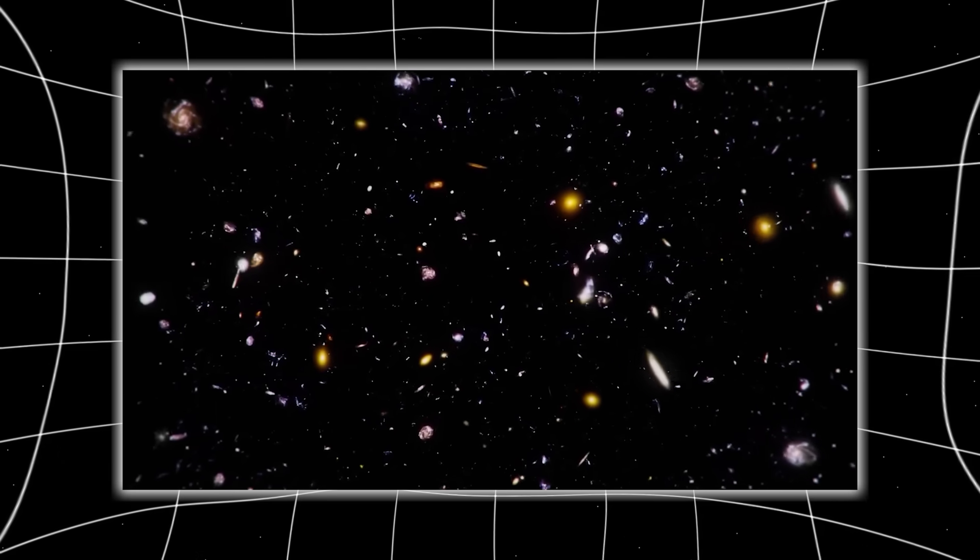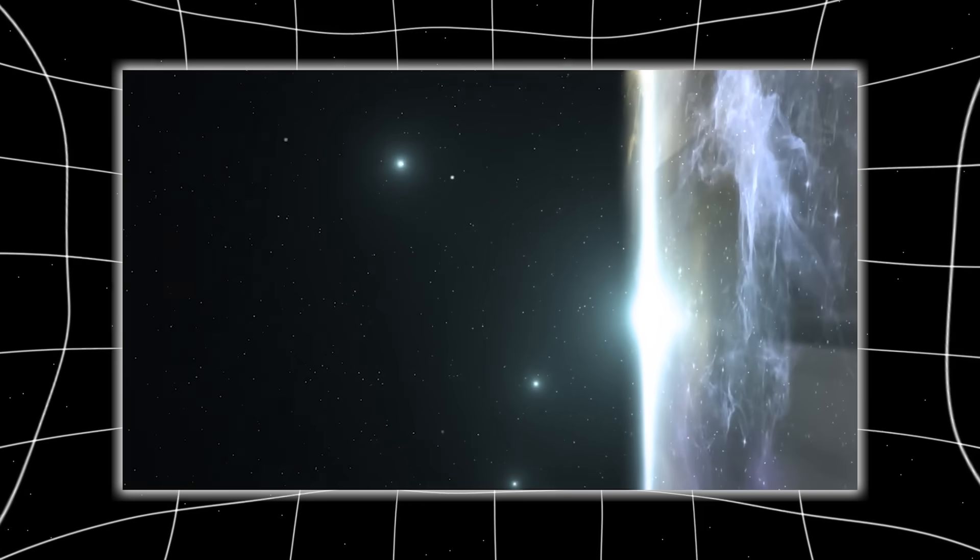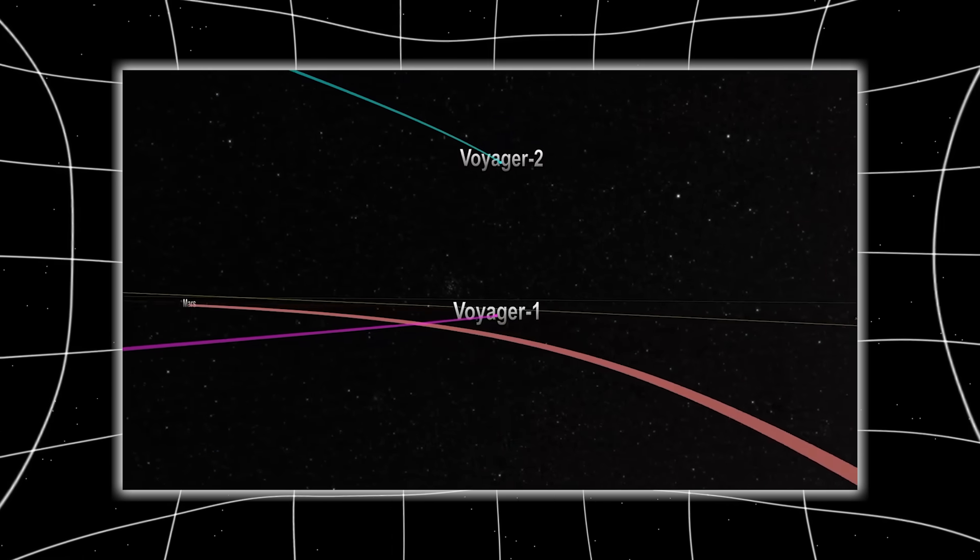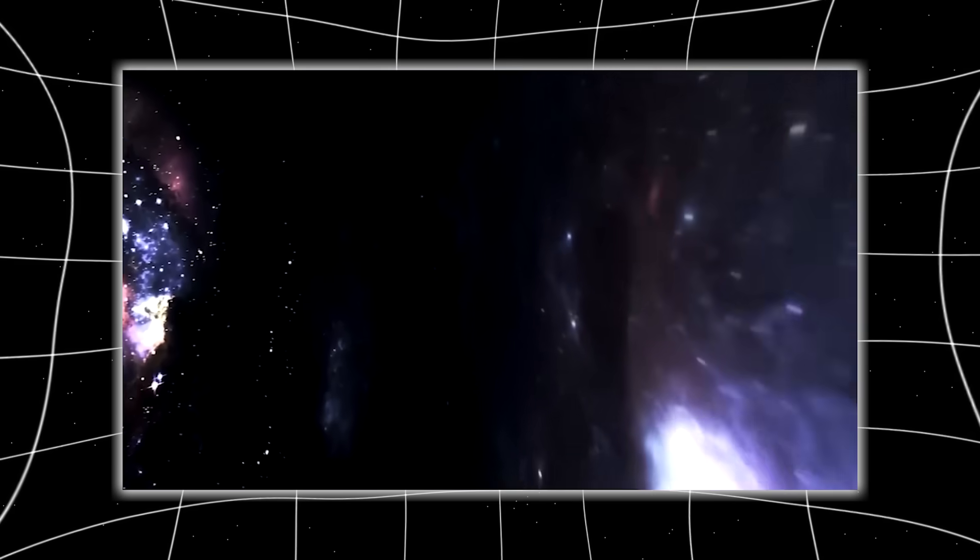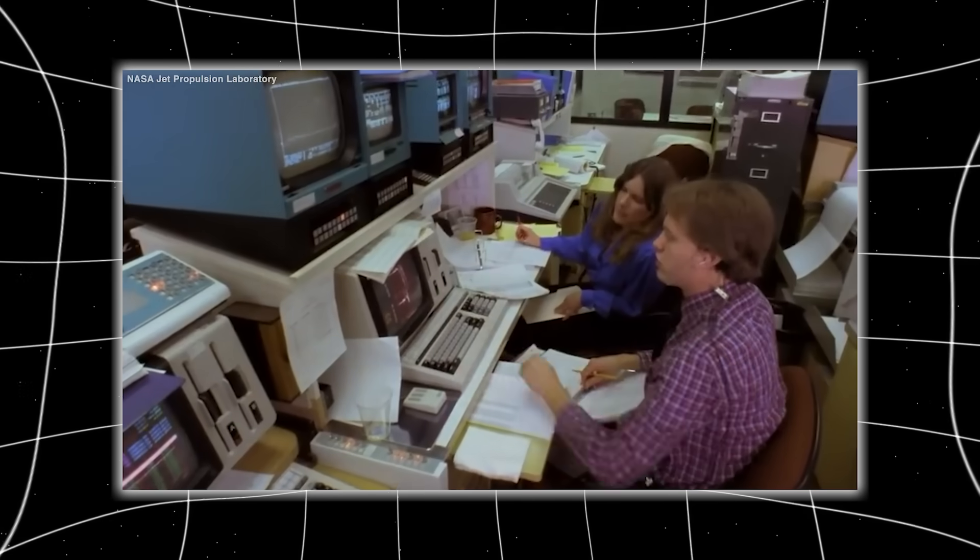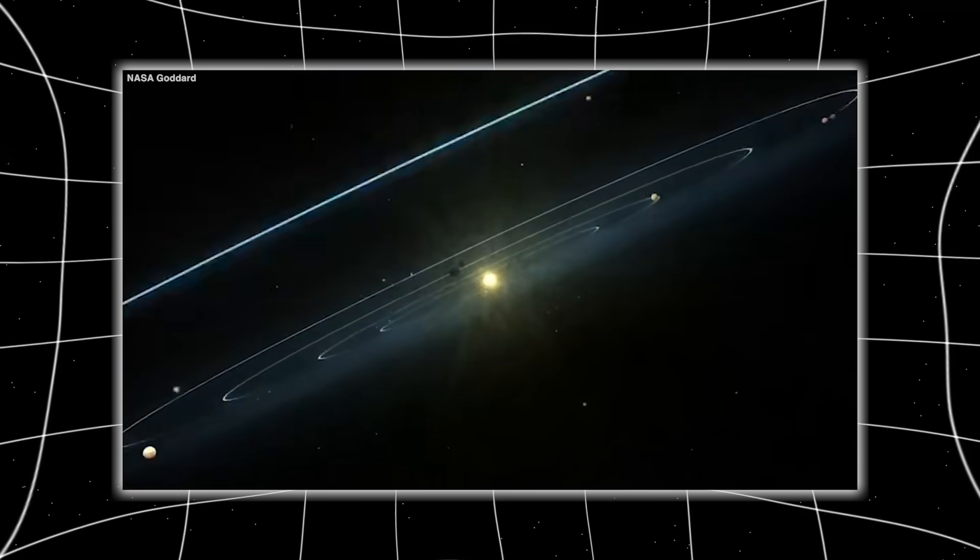For nearly five decades, Voyager 1 has been sailing through space, whispering secrets from the edge of our known universe. It was built to observe but never to act, to listen but never to speak. And yet, just weeks ago, something changed.